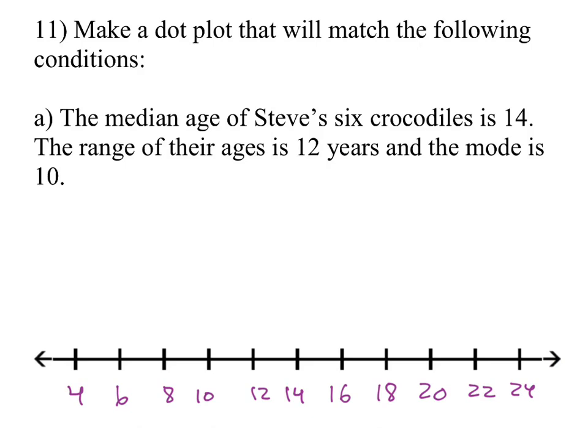And so, it doesn't tell us how many crocodiles there are. So you can kind of just start putting Xs on it. So like, let's say if my median is 14. Let's put an X there. I can put dots over here if I put the same amount over here. And let's get the range on there of 12 years. So let's just kind of pick some dots here. So if I go between 20 going down 12 would be 8. If I put my Xs there, then I know I can't go outside that. That'll make my range 12, right? Going into an 8 and 20 is 12.